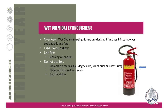Wet chemical extinguishers are designed for Class F fires involving cooking oil and fats. This type of extinguisher is very important to keep in the kitchen — it is really important to have in homes as well. It has a yellow-colored label with 'Wet Chemical' written on it. Do not use it for flammable metals, liquid gases, or electrical fires.